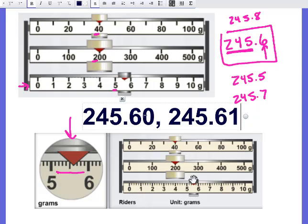But just saying 245 point 6 and not having that 0 or 1 would be incorrect, because that would mean the triple beam balance looked like this one above where we didn't have those tick marks between the 5 and the 6. But we do, which means we should have one extra level of significant figures.